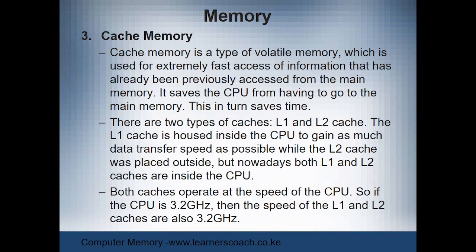In most computers, cache comes in different forms. We can have one cache memory, two, or even three. The more the cache memory, the faster the processor. Typically, most computers have up to level 2 cache memory. Cache level 1 memory is normally situated within the processor itself, while level 2 and level 3 are situated outside the processor itself, but they help improve the speed of the CPU.